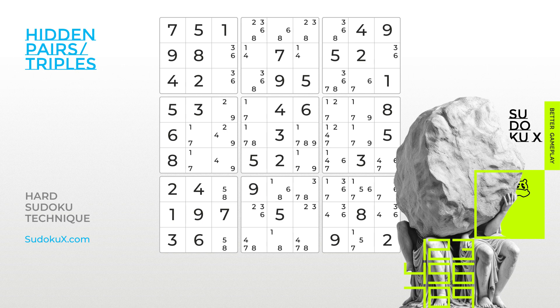Welcome to the Sudoku Academy by SudokuX, where we build upon the foundational skills acquired at beginner levels. In this tutorial and beyond, you'll learn intermediate strategies that bridge the gap between easy and hard gameplay. Today we will introduce you to an elimination technique called Hidden Pairs and Hidden Triples.